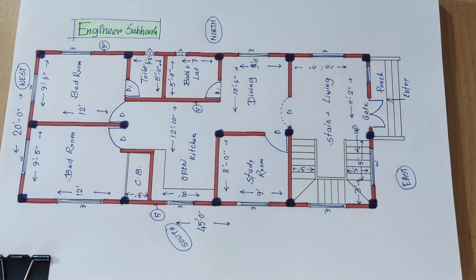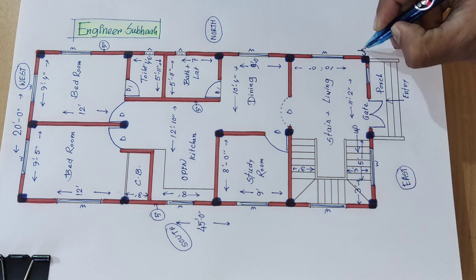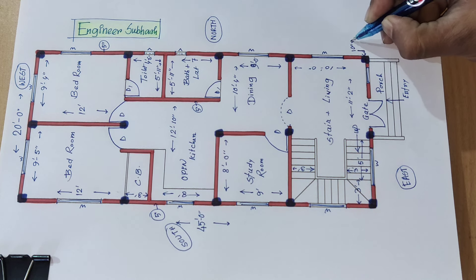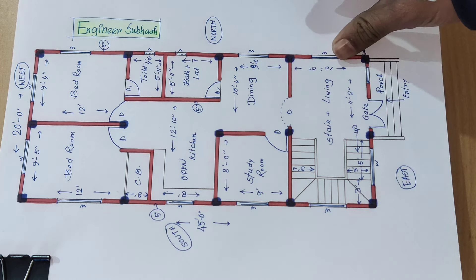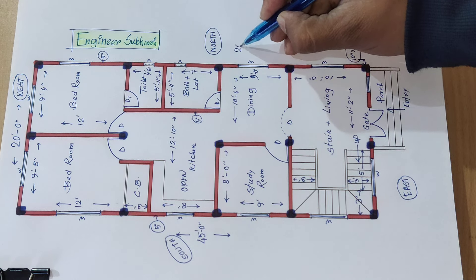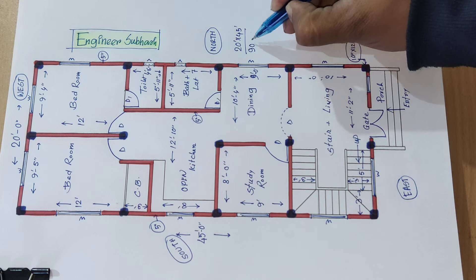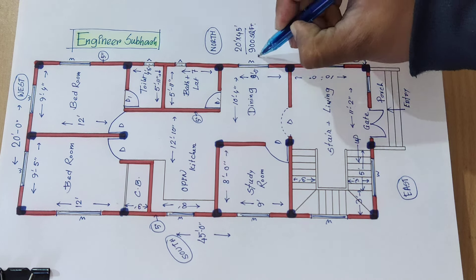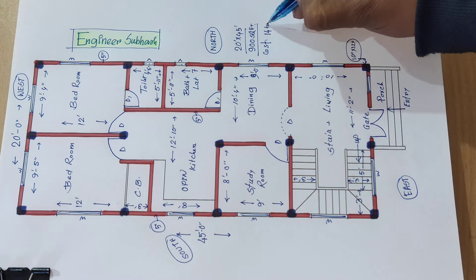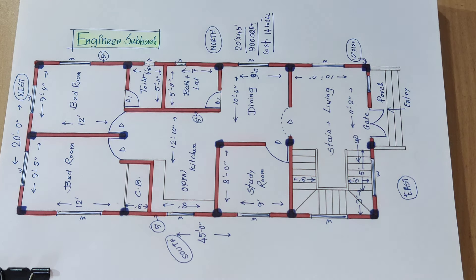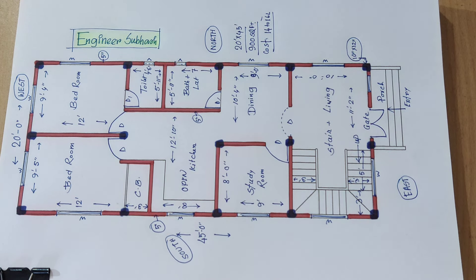15 numbers of columns here we have provided. 10 by 12 inch column we have provided. 20 into 45 is equal to 900 square feet. This cost is 14 to 16 lakh rupees. This is the plan and design of east facing. If you like this video and design, please share it.